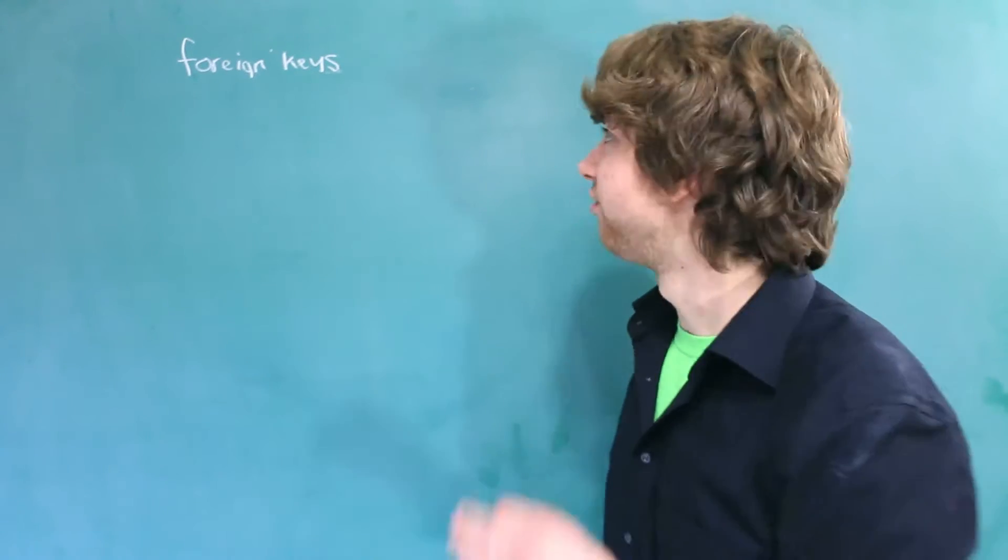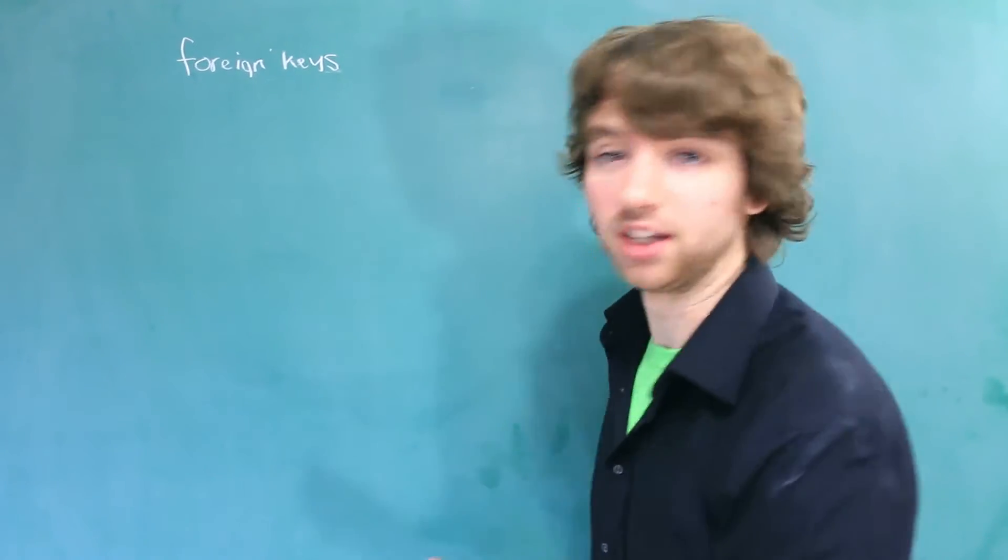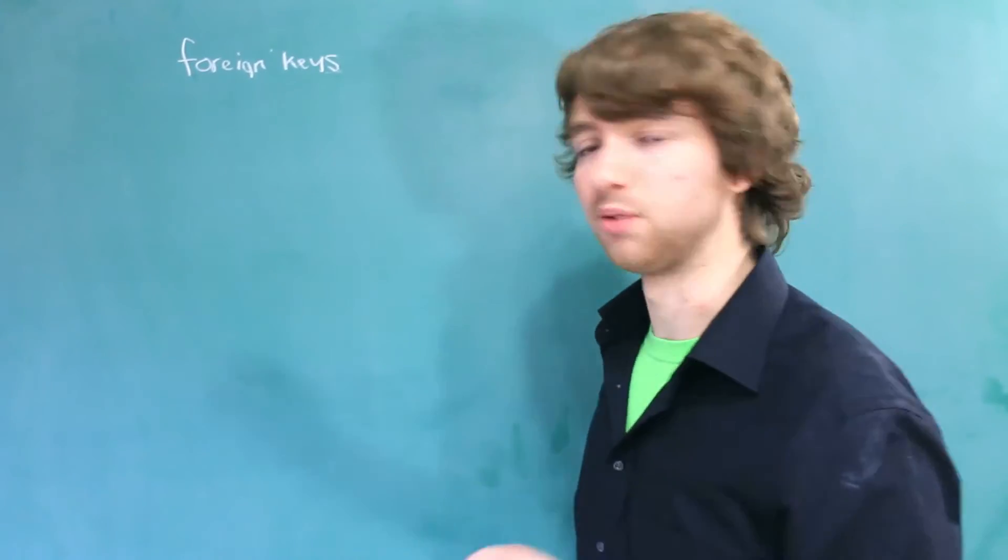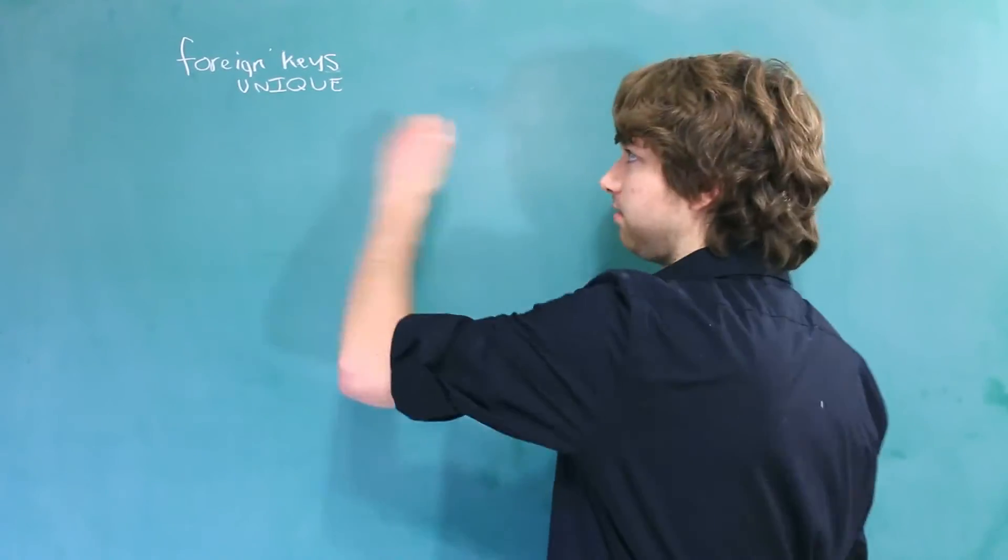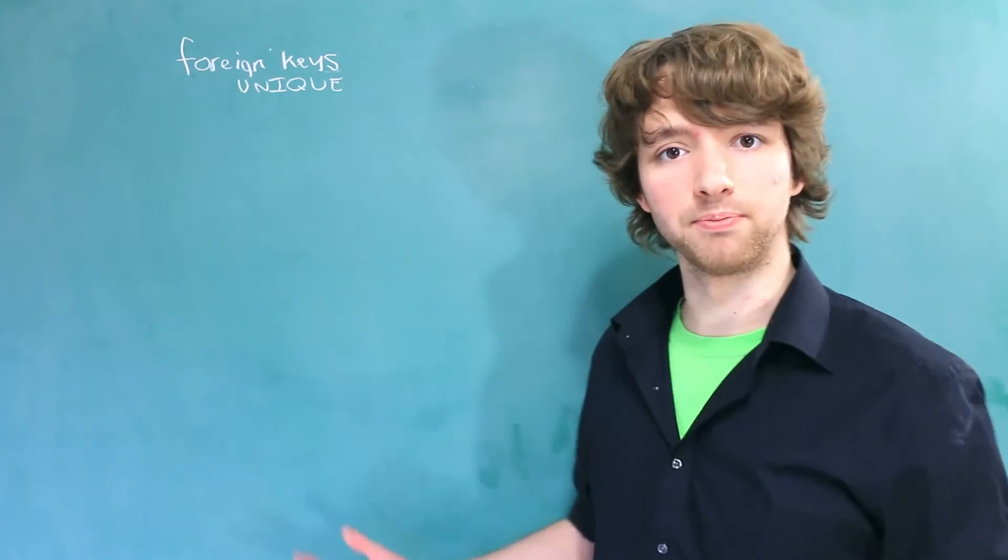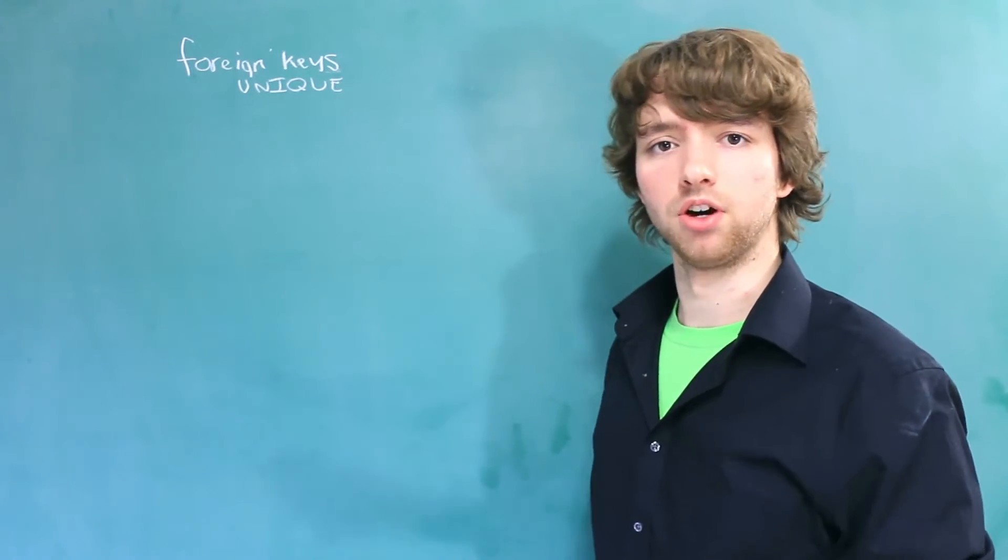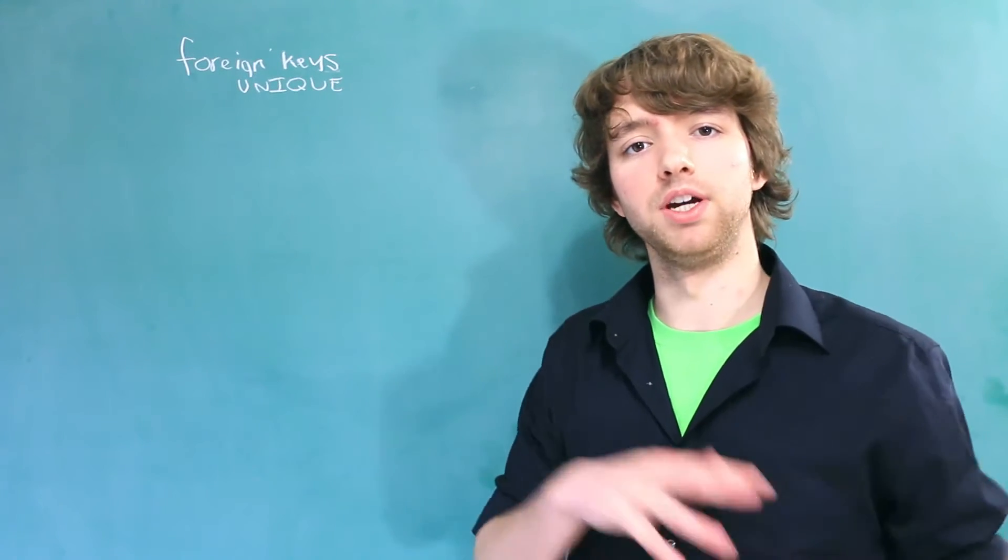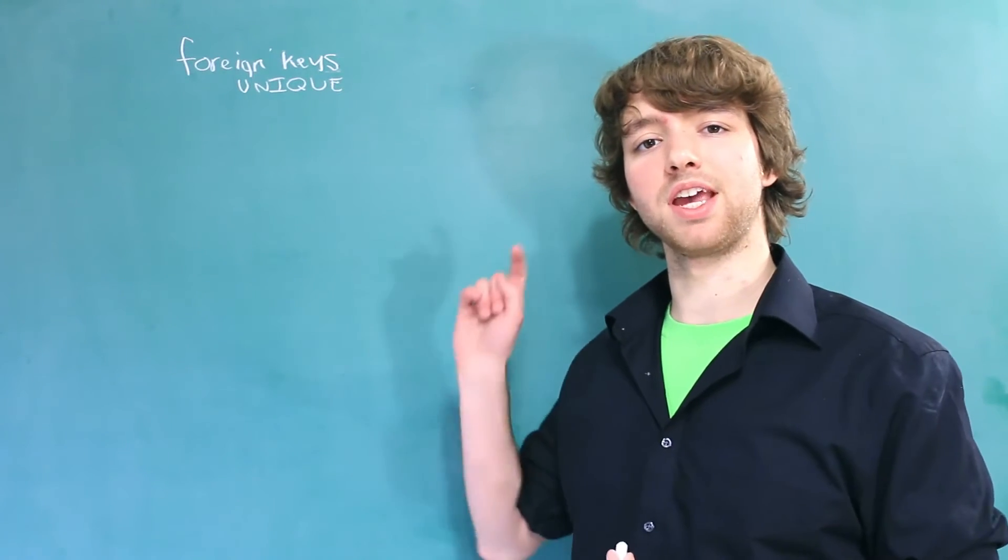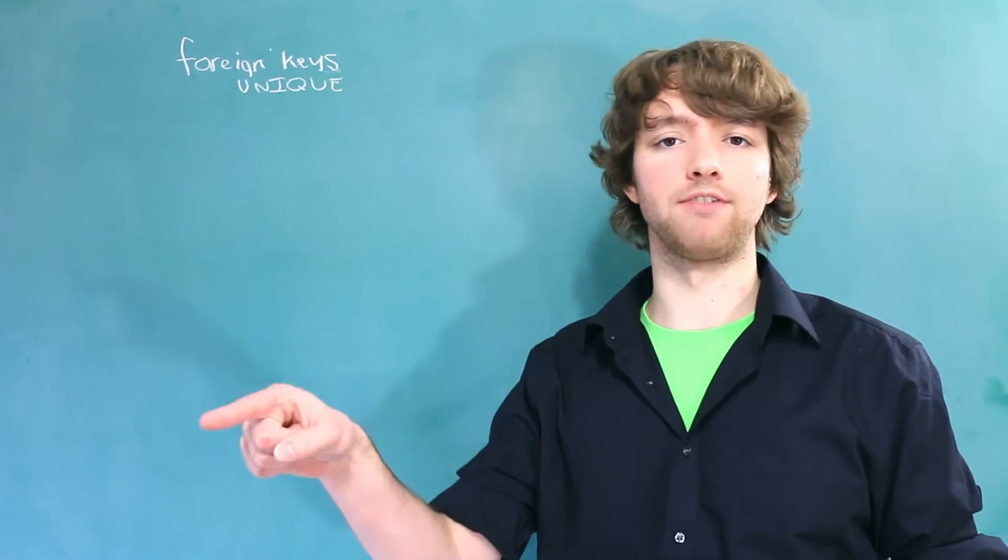This is databases here. Foreign keys reference primary keys or unique columns. And primary keys are also unique, so you can just write unique and that includes both of them. Why does it have to be unique though? Essentially, when we want to reference data in another table in a database, we want to be able to say exactly what row we are referencing.